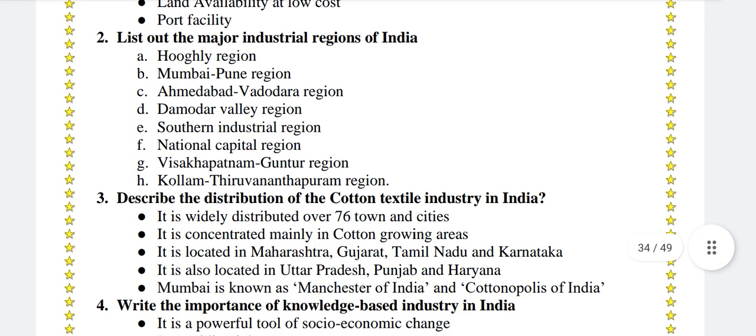List of the major industrial regions of India: Pugli region, Mumbai-Pune region, Ahmedabad-Vadodara region, Damodar Valley region, Southern Industrial region, National Capital region, Vishakhapatnam-Guntur region, and Kollam-Thiruvananthapuram region.